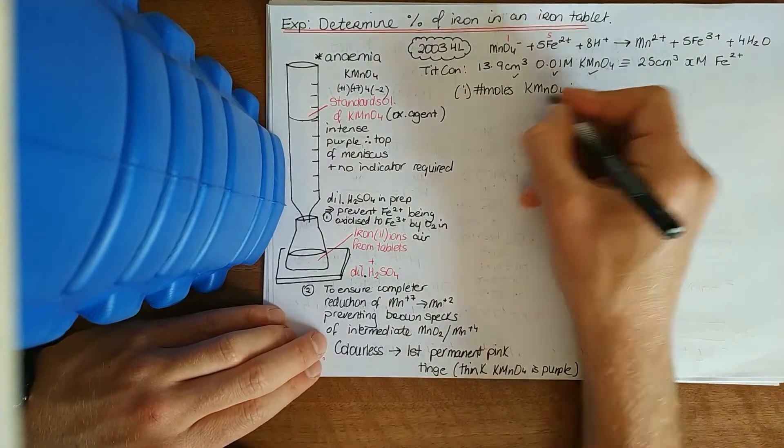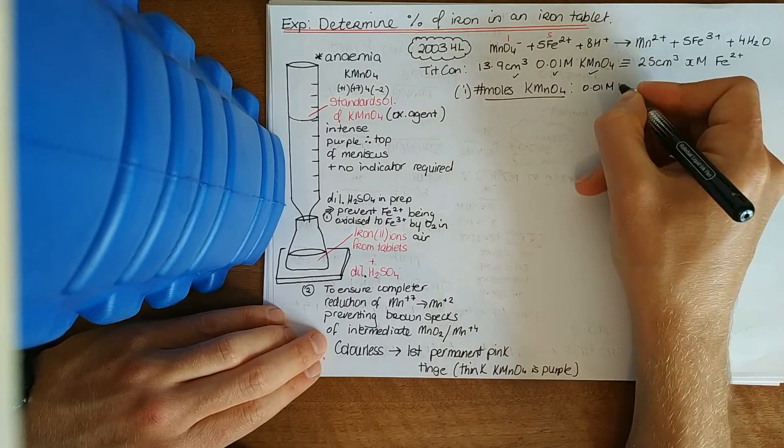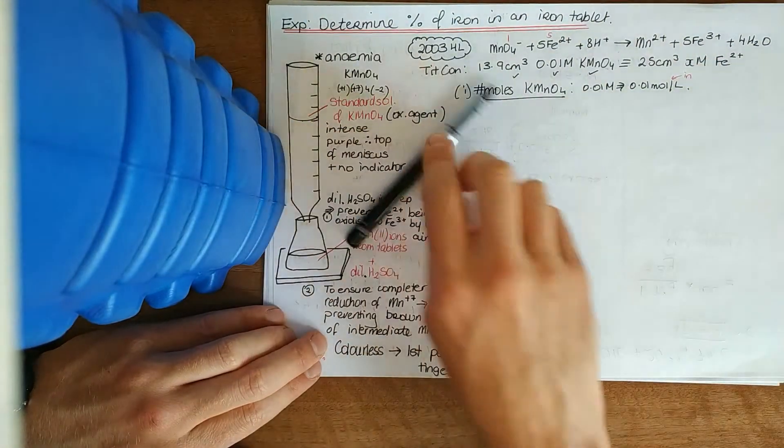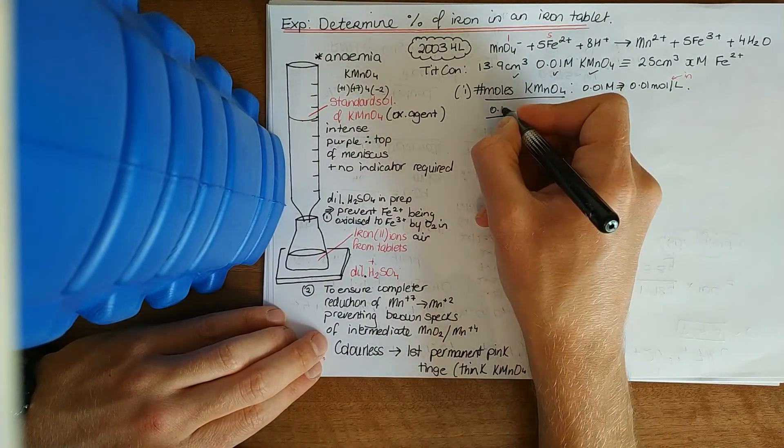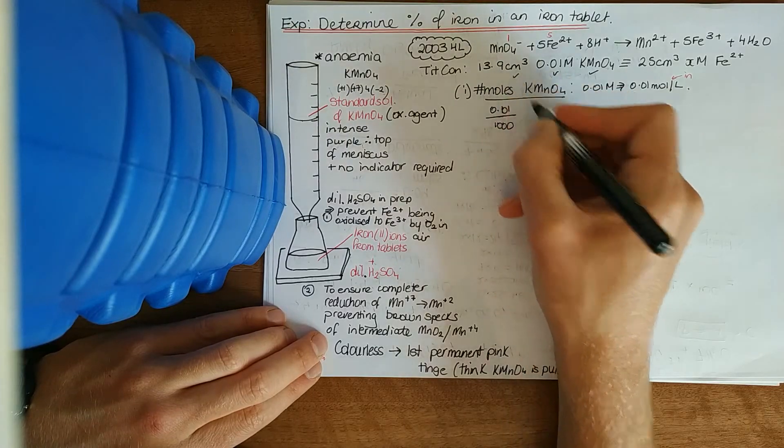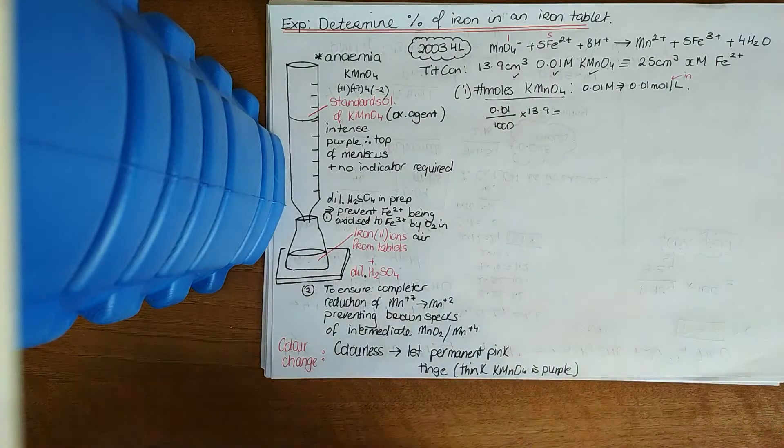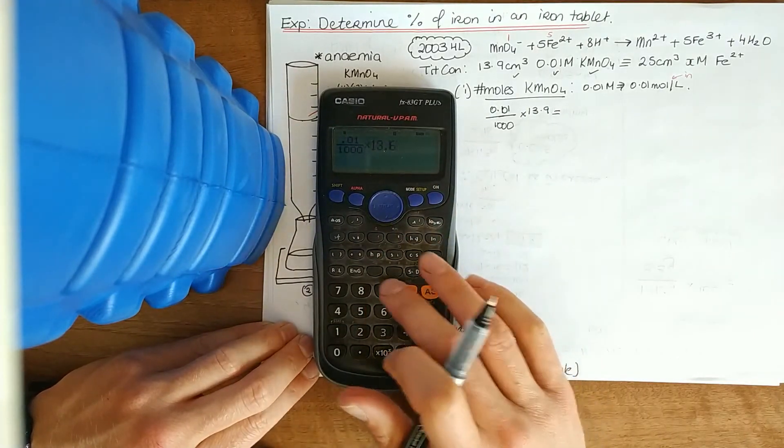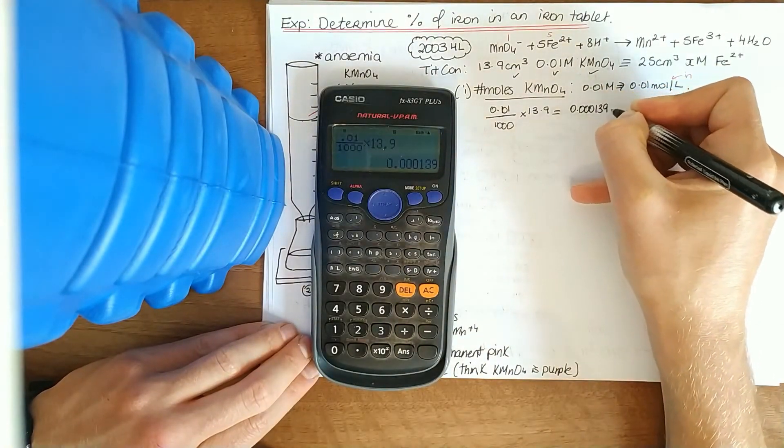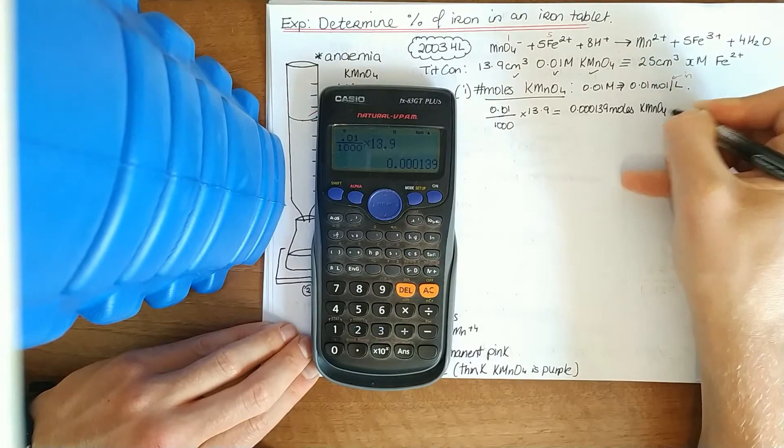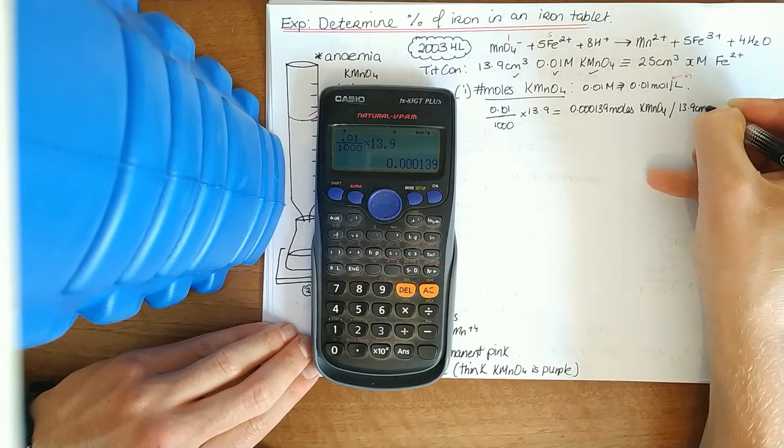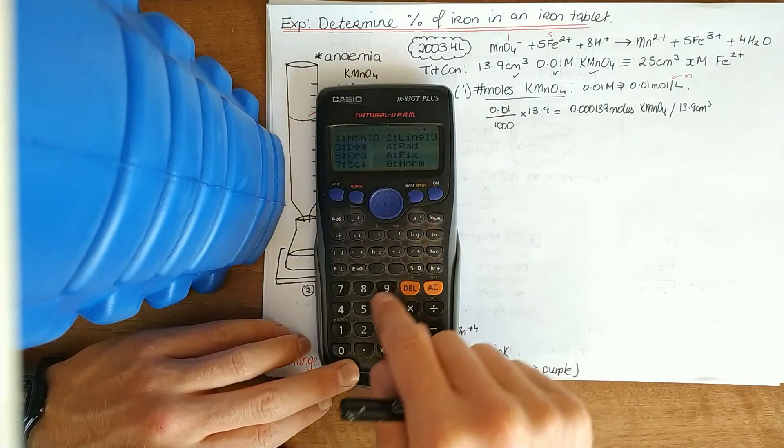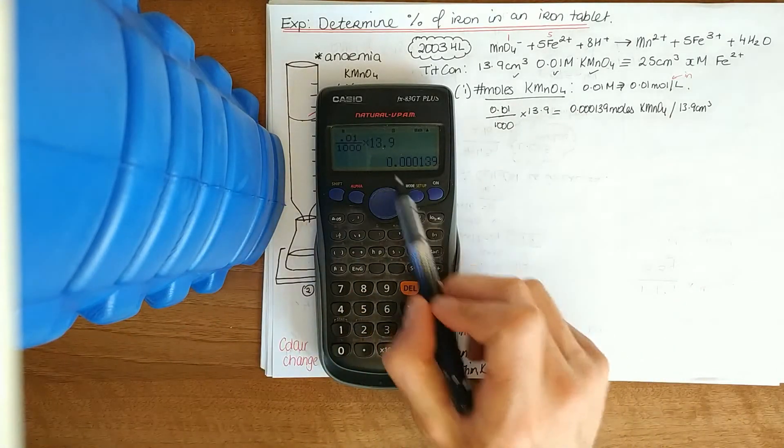The number of moles of KMnO4, once you see that big M, work with it. So 0.01 M automatically means 0.01 moles per litre. The backslash means divide 0.01 over a thousand, and how much volume have we got here? 13.9. So we calculate 0.01 over a thousand times 13.9. If you get your scientific notation, go shift, mode, 8 for normal, and then 2. That'll get you into your decimal format.